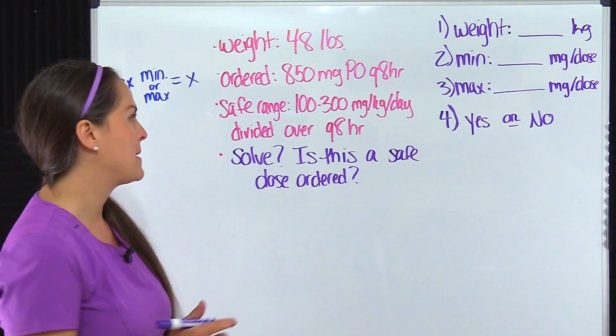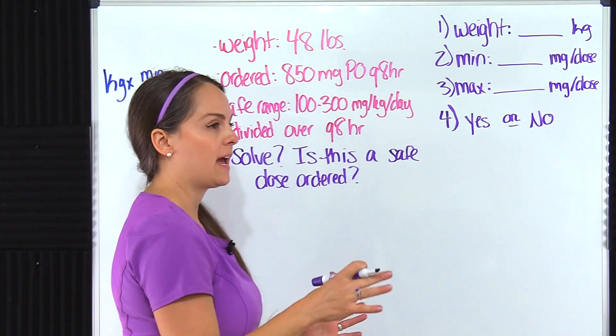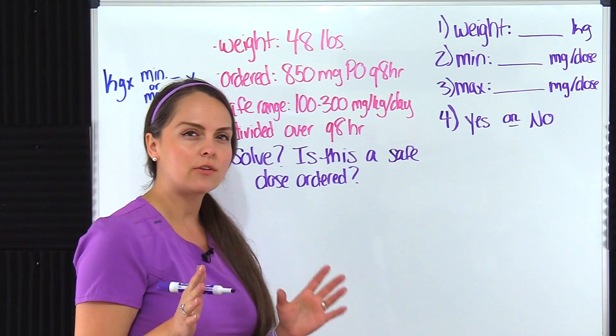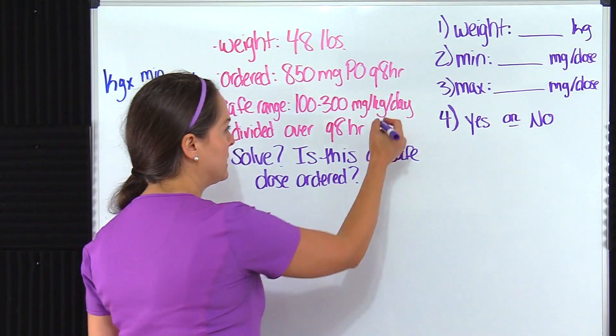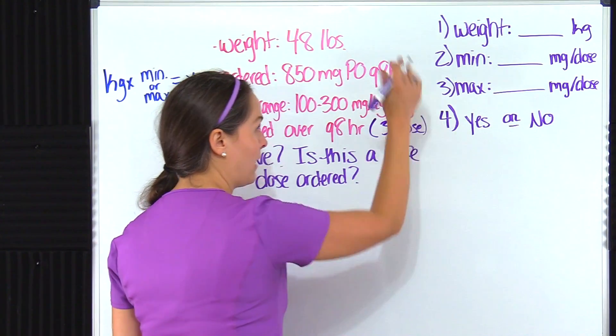So let's think about this for a moment. We know that our patient can have this throughout the whole day, but we have to give it to them every eight hours. So how many doses are they going to receive over this timeframe? They're going to receive three doses. So let's just write that there so we have that for when we're actually solving.